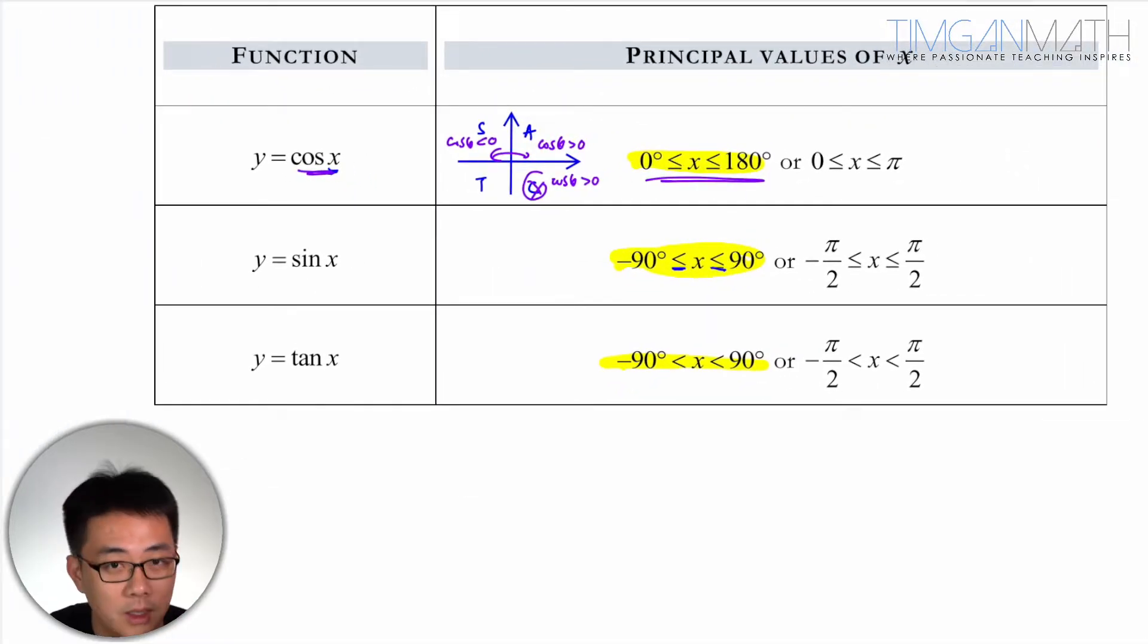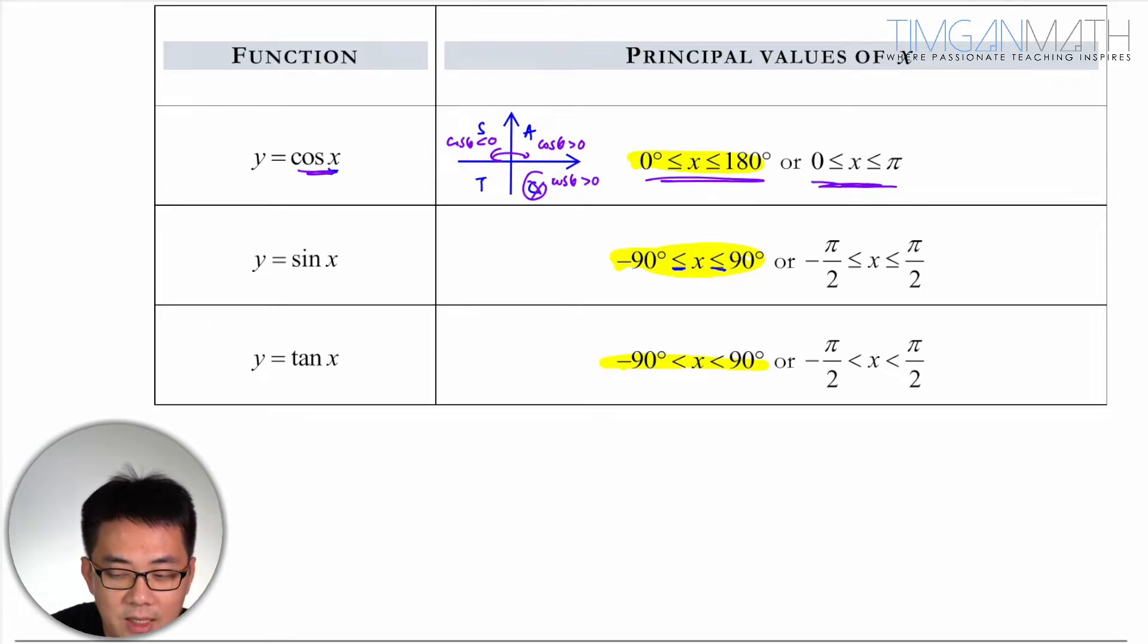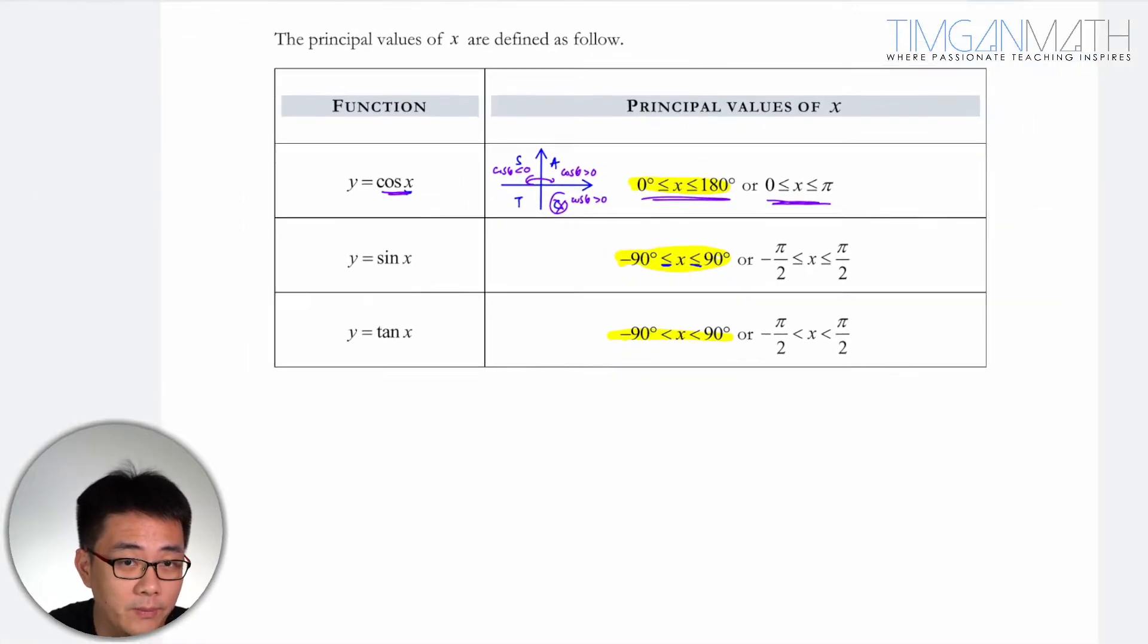Your calculator will give you, when you inverse the cosine, it will be expressed in the principal value. So you don't have to worry about it.